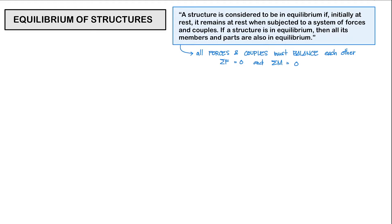If a structure is in equilibrium, then all its members and parts are also in equilibrium. Thus, all forces and couples must balance each other, and that means that the summation of forces must be equal to zero and the summation of moment at certain points or along an axis must also be equal to zero.